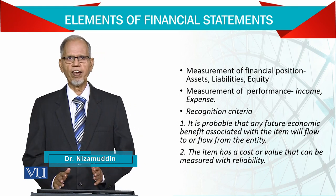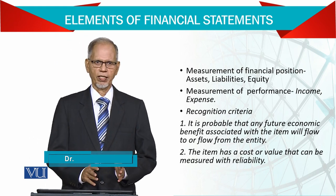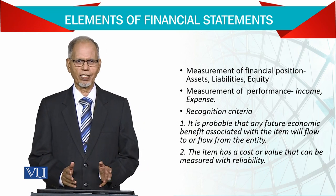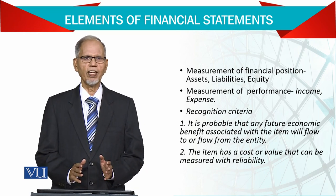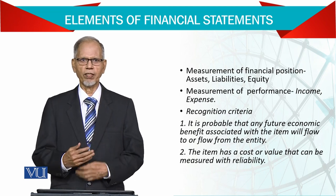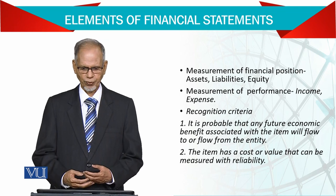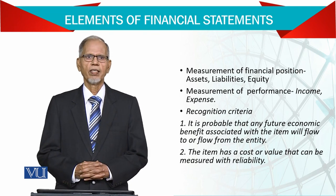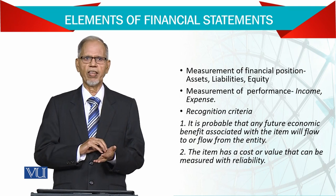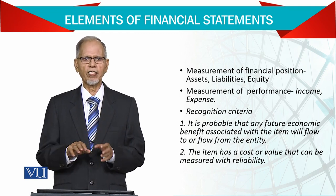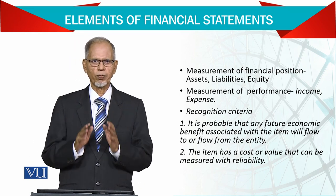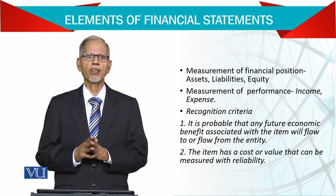Now in assets, we have property, plant and equipment — previously we used to call it fixed assets. They are not for sale, but they are utilized in the process of producing goods and services. We have land and building, plant and equipment, office equipment, office furniture, vehicles, and so on. They are all property, plant and equipment, or other fixed assets.